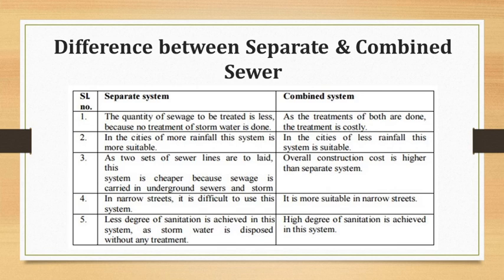We have now covered the first module, which included: analysis of wastewater, sampling of wastewater, objectives of wastewater treatment plants, physical characteristics of wastewater, chemical characteristics, biological characteristics, and different terms related to sewage and wastewater such as sludge, sewage, domestic sewage, industrial sewage, sanitary sewage, night soil, sewer, separate sewer, combined sewer, branch sewer, sewage system, and dilution factor.